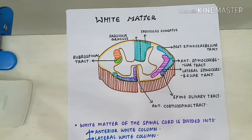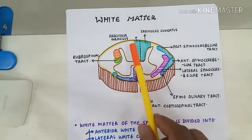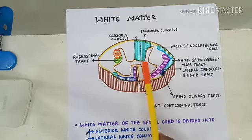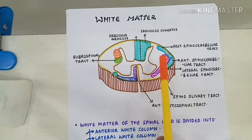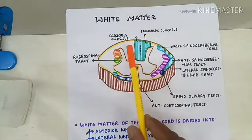Today's part of the video we will be covering about the white matter. In the previous section of the videos we had covered about the grey matter. This is a diagram I have already drawn here — a transverse section of the spinal cord — which consists of two parts: the white matter and the grey matter. The grey matter we had already covered in the previous section, so today we will be covering about the white matter.